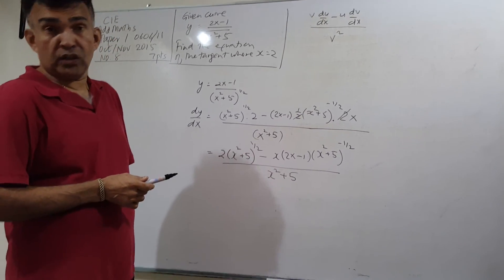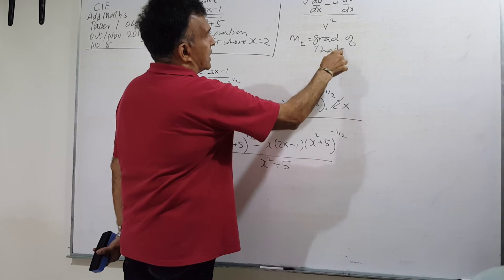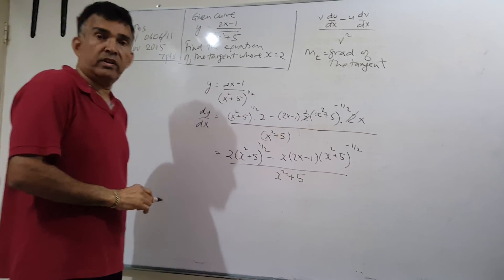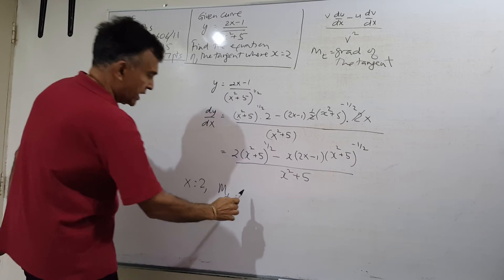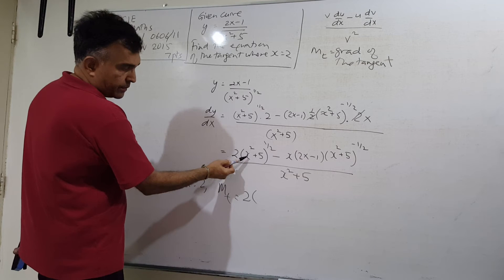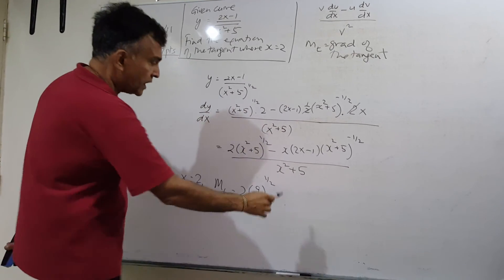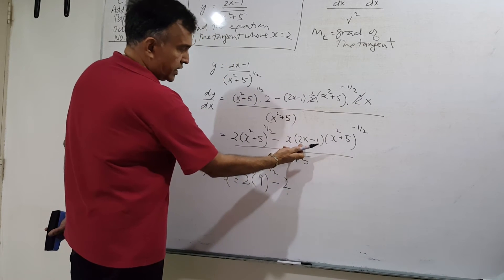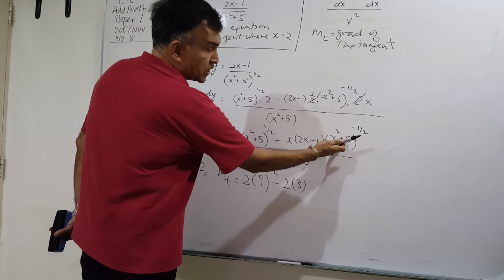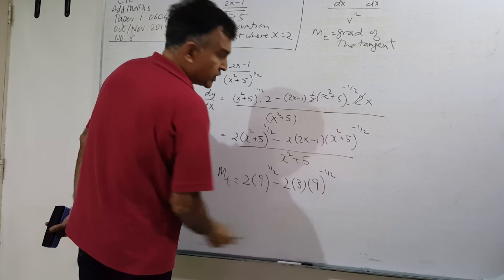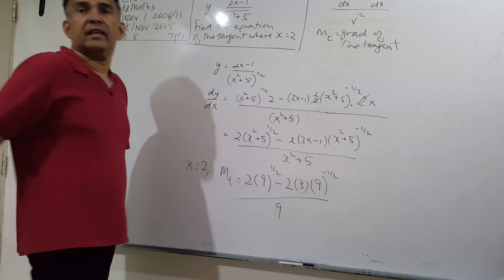We need to find the equation of the tangent, so I'm going to call the gradient of the tangent mt. To find mt, plug in x equals 2 into dy/dx. In the numerator: 2 squared is 4, plus 5 is 9. Then 2 times 2 is 4, minus 1 is 3. And we have 9 to the negative 1/2. The denominator is x squared plus 5, which gives 9.